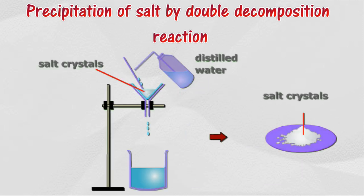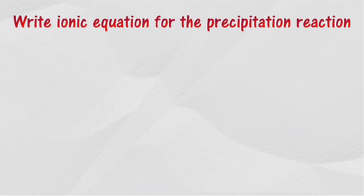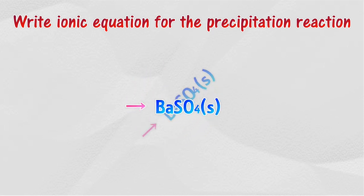Salt crystals are formed as precipitates. The salt crystals formed are then filtered and rinsed with a little distilled water. The salt crystals are then dried using a filter paper.